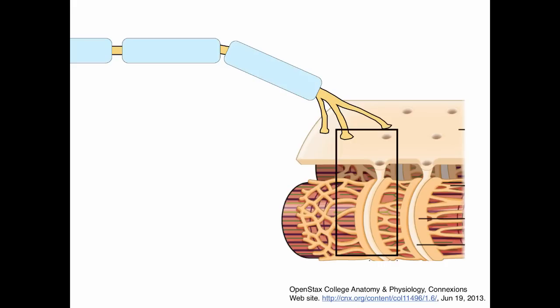So let's have a look at how a motor neuron communicates with skeletal muscle tissue. We're going to do this by blowing up the neuromuscular junction. That is, the connection between the motor neuron and skeletal muscle fiber.